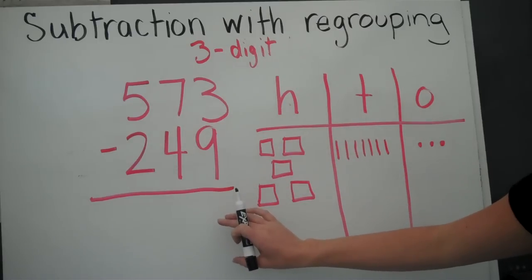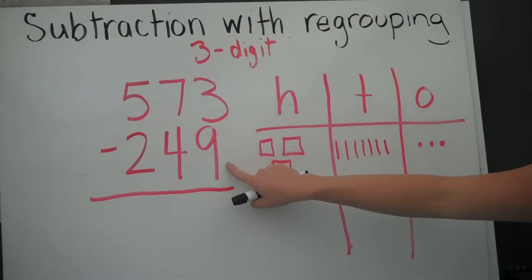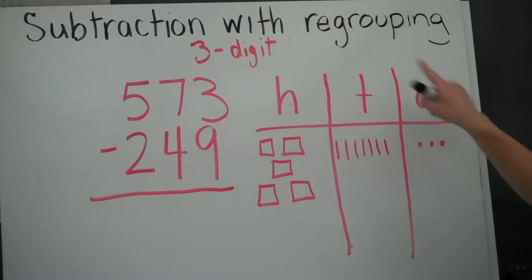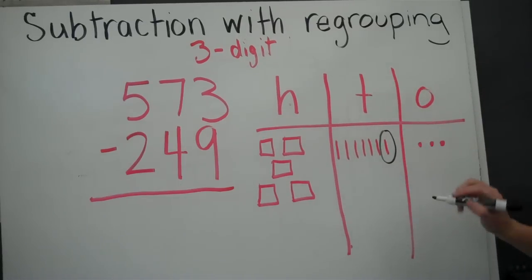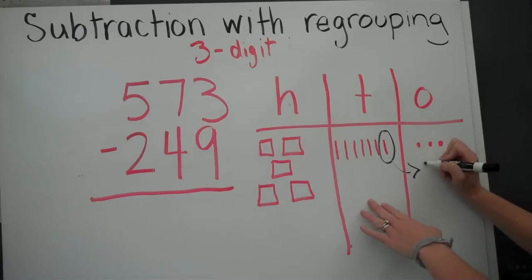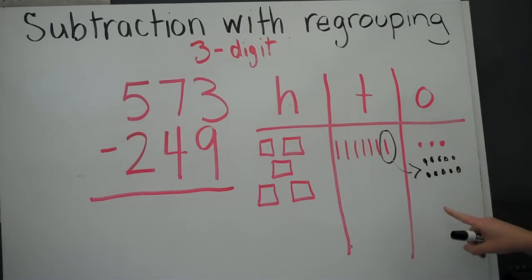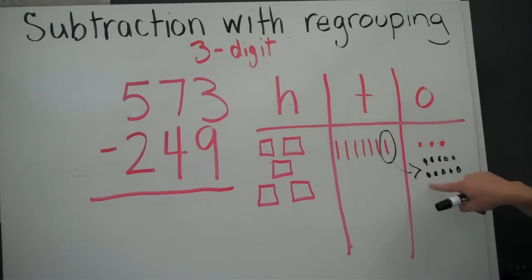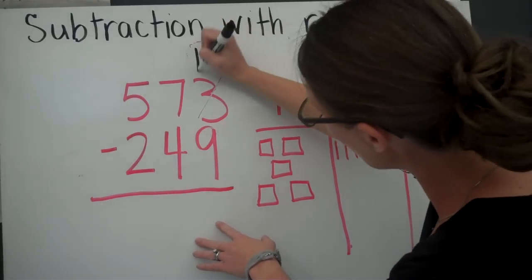Let's start in the ones because that's where we always start. I only have three, and it says I need to take nine away. I can't do that. So I'm going to go into the next column, which is the tens, and I'm going to regroup it. Instead of saying I have 1 ten, I'm going to say that I have 10 ones. Now I don't have three ones anymore. I have 3 plus 10, which is 13.